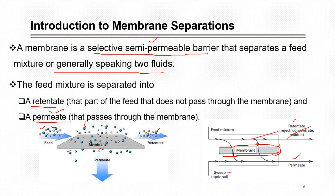Sometimes it is necessary to remove the permeate from the system so it does not accumulate. An optional sweep can be used — passing some pressurized liquid or purified gas through the system — to push the permeate out. For example, if gas is accumulating on the permeate side, a similar purified gas can be introduced to sweep it out, or pressurized liquid can be used to facilitate removal.